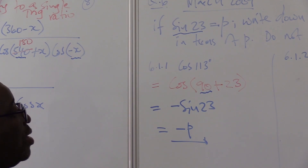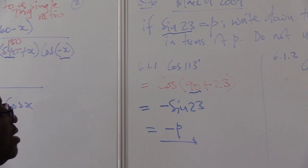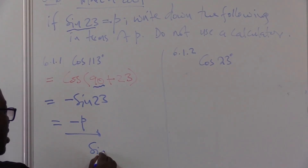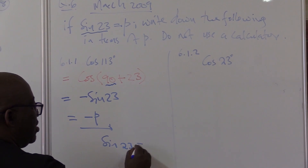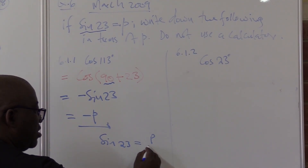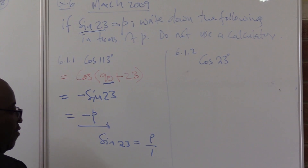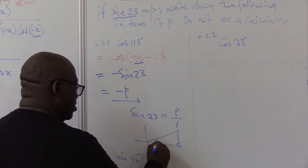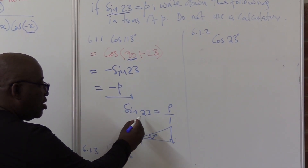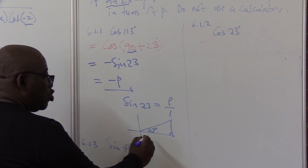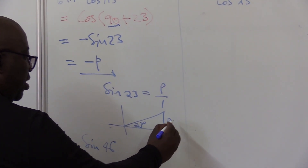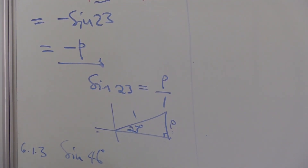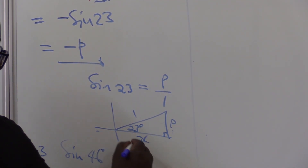I want us to look at this second one: cosine of 23. Let me put this into a diagram. Sin 23 is P — remember, these are ratios. If it is P, it is the same as P over 1. So if we put this in a right-angle triangle, this is 23 degrees. Sin 23 is P over 1, so P is the opposite and 1 is the hypotenuse. We're short of this side, which we refer to as X.